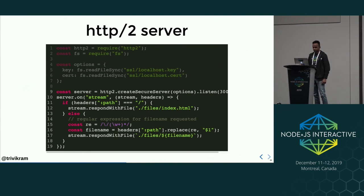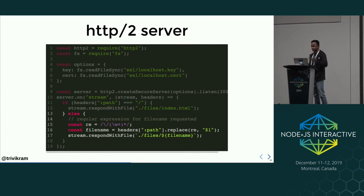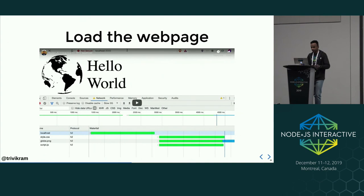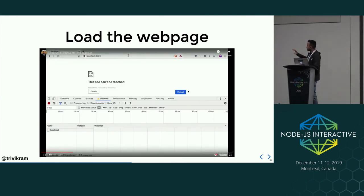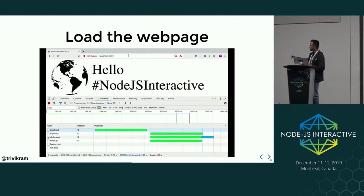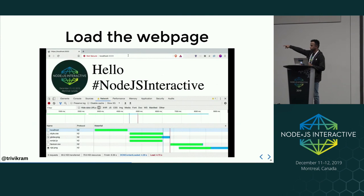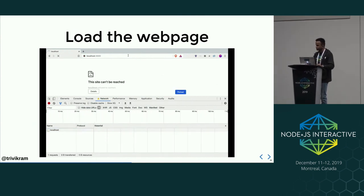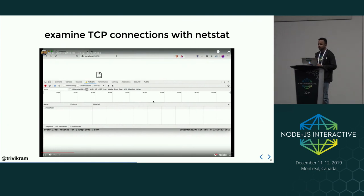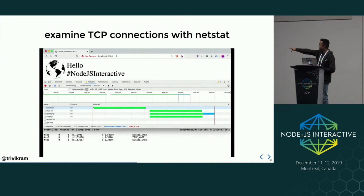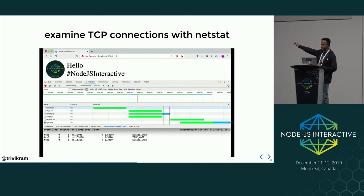Let's see how it works. We write an HTTP/2 server. We create the server and if the path is slash we return index.html, otherwise we return the matched file. If you examine using the network tab, it looks the same as HTTP/1.1 but in the protocol column you will see HTTP/2 is used. Using the netstat command, you will see that only one TCP connection is created, although three requests are sent simultaneously.